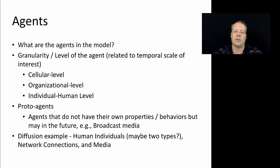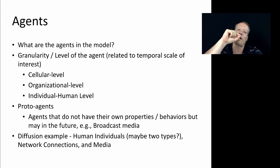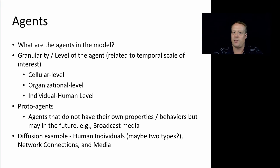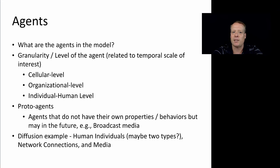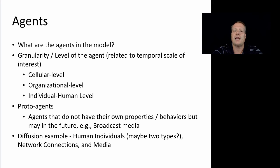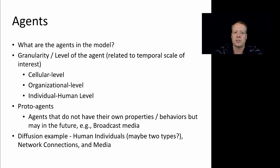The second thing you want to consider is what are the agents of your model, and tied up with this is the granularity or level of the agent — at what scale are we going to model our agents. Are we going to do it at a cellular level, at an organization level, or as is commonly done, at the individual human level. This is partially related to the temporal scale question: are we interested in how much information a person adopts tomorrow, or how much information an organization adopts over the course of a year, for instance.